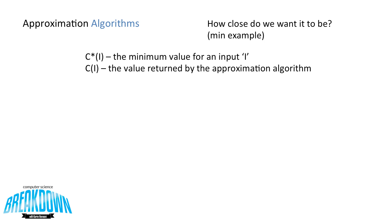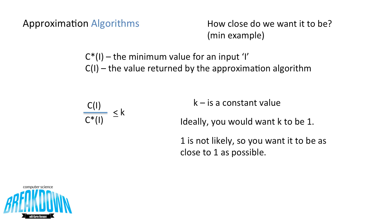So let's assume that c*_i is the optimal solution, the minimum value for an input i, and c_i is the value returned by the approximation algorithm. When we put them into a ratio, we have c_i / c*_i ≤ k, k being a constant value. Ideally, we'd want k to be equal to one. However, it's unlikely with an approximation that it would be equal to one. That would be the best case scenario. So we want it to be as close to one as possible. It'll never be less than one, so it'll be as close to one from the positive side. So maybe 1.6, maybe 1.8, perhaps even two. But the closer it is to one, the more accurate our approximation algorithm is. The beauty of this system is that the c_i that was calculated was determined by a polynomial time algorithm, so we found c_i in relatively quick time.